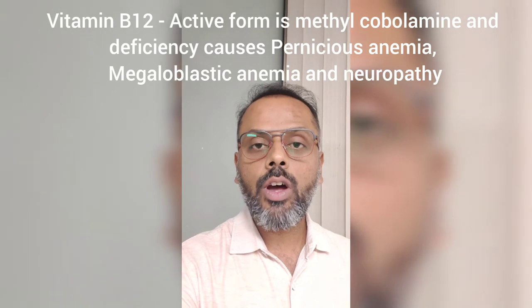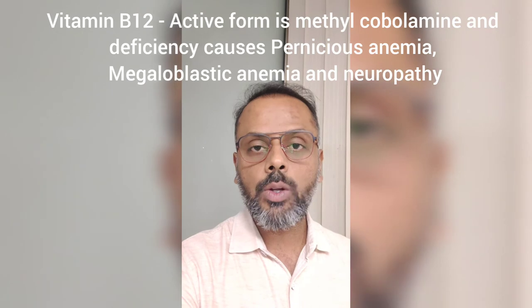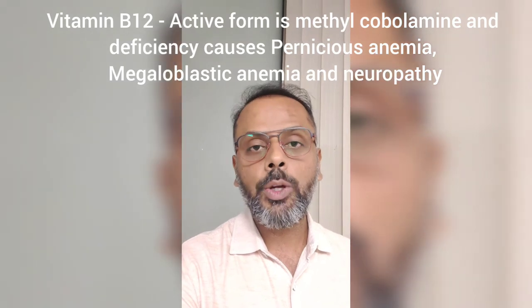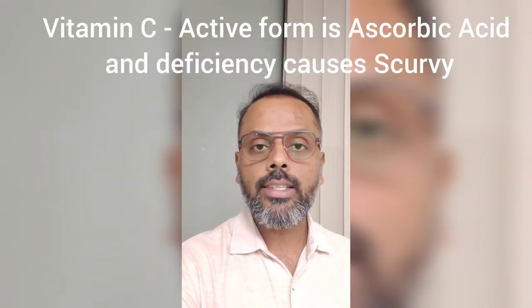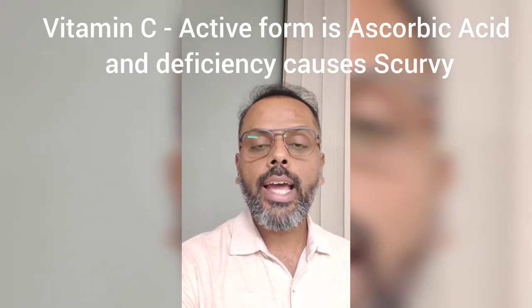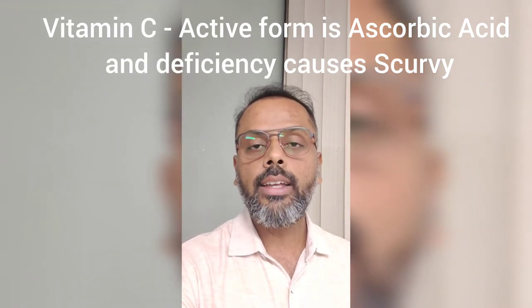Vitamin B12 has an active form called methylcobalamin, which is required for the conversion of homocysteine to methionine and the conversion of methylmalonyl-CoA to succinyl-CoA. The deficiency of vitamin B12 causes megaloblastic anemia, pernicious anemia, and neuropathy. The last water-soluble vitamin is vitamin C, also known as ascorbic acid. Its active form is ascorbic acid itself, which is required for hydroxylation of collagen and steroids, acts as an antioxidant, and helps in the absorption of iron in the intestine. The deficiency of ascorbic acid causes scurvy.